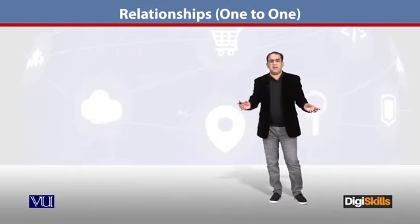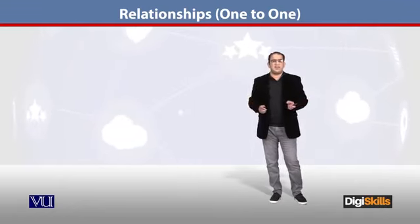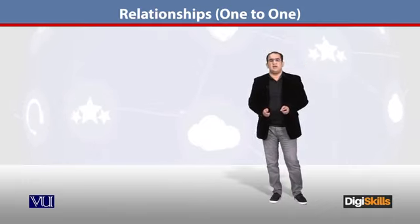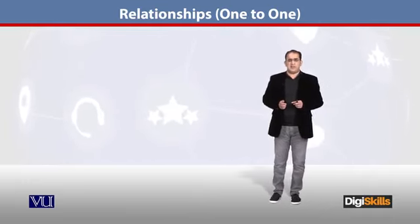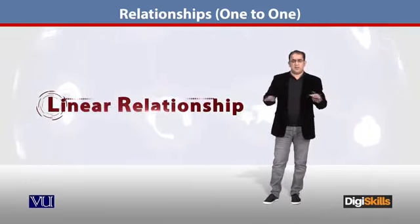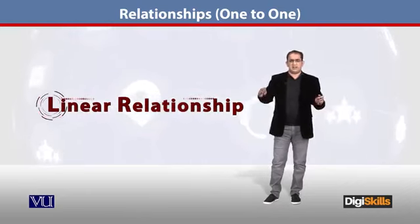The reason is that the two entities have no parent-child or master-detail type of relationship. This type of relationship we call a linear relationship or flat relationship—both are at the same level, there's no master-detail. So it's our choice: any one table's primary key we can take to the other table as a foreign key. This is rule number one.